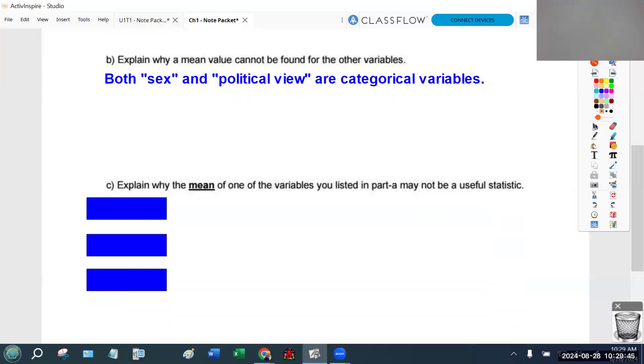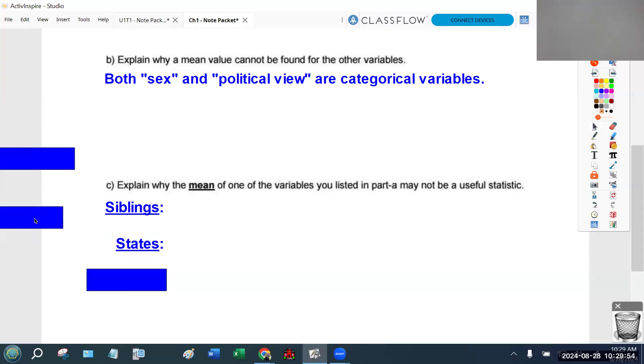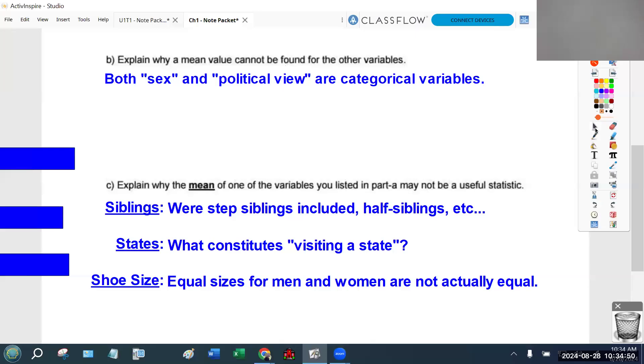So explain why the mean of one of the variables you listed in Part A may not be a useful statistic. In other words, if I report to you the average number of siblings in this room was 2.1, or if I report to you the average number of states visited in this room was 16.8, or I report to you the average shoe size in this room was 8.1, okay? Just pick one of these. I want somebody to volunteer. Don't give me all three. Pick whichever one you want to focus on. Can you give me a reason why that mean by itself might not be as useful as you want it to be? The point I'm trying to make with this specific example is that if you're going to go out and collect data, and you ultimately want to be able to analyze it, you really have to think carefully about how you're collecting the data. And that can be as simple as giving people instruction on what qualifies as visiting a state. You know, you could say, how many states have you visited? And by visit, I mean have spent at least 24 consecutive hours in. Something like that. And that would help make the mean far more meaningful. Questions?